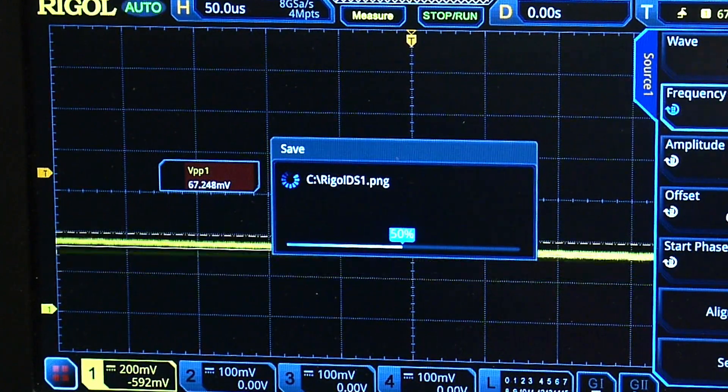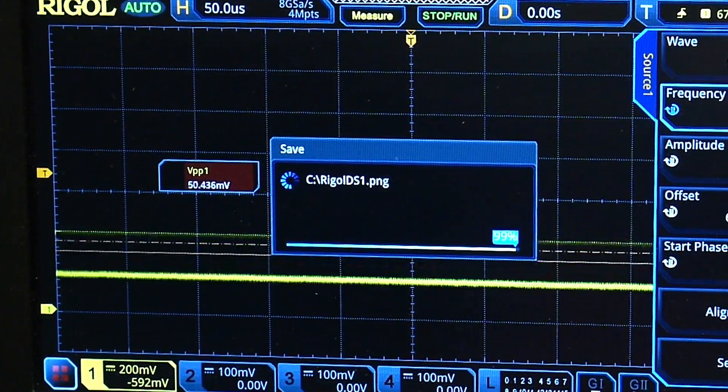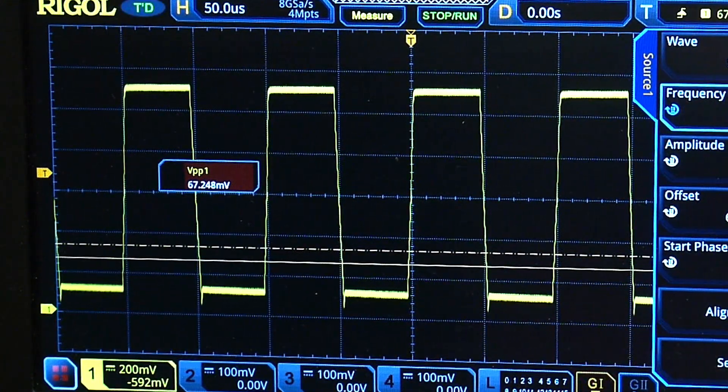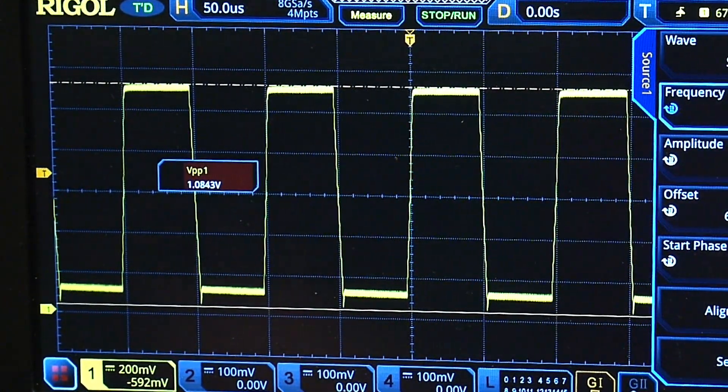And is it square wave today? Oops. I turned it off. Ah, what's it doing? I hit the wrong buttons here. There we go. Square wave. All right. So we have a square wave.